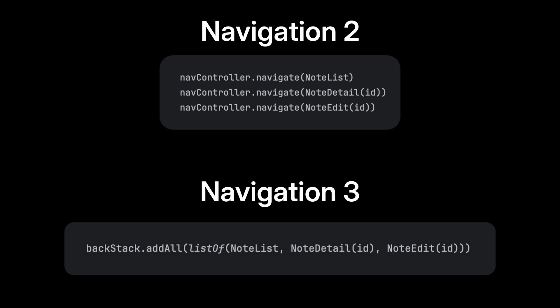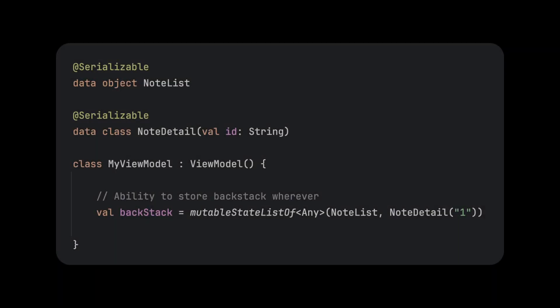Or to put it simply, Navigation 2 made you describe the navigational steps to get to a backstack. Navigation 3 lets you just set the backstack with the exact content that you want. And since we now have control, it means we can finally store our backstack in something like an Activity Scope ViewModel and treat it as a single source of truth. This means that your navigation logic just becomes regular state like anything else and is fully decoupled from your UI.